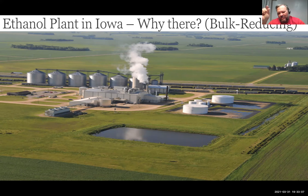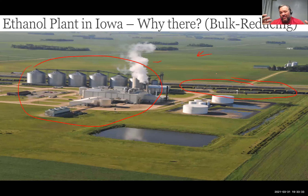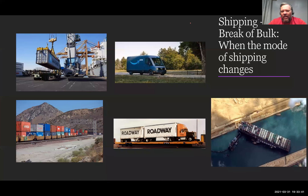A real-world example is an ethanol plant. Ethanol comes from corn and is used in gasoline — you'll see '10% ethanol' at the gas station. These plants are typically located right next to corn fields, close to the raw material. This is a bulk-reducing operation: large quantities of corn are converted into ethanol and then shipped by train to distribution points.